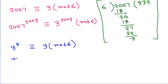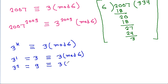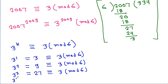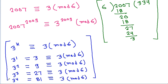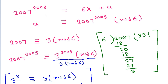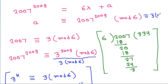You can check the pattern: 3^1 = 3 ≡ 3 mod 6, 3^2 = 9 ≡ 3 mod 6, 3^3 = 27 ≡ 3 mod 6, 3^4 = 81 ≡ 3 mod 6, and so on. So 3^2009 mod 6 ≡ 3 mod 6, which means a = 3.